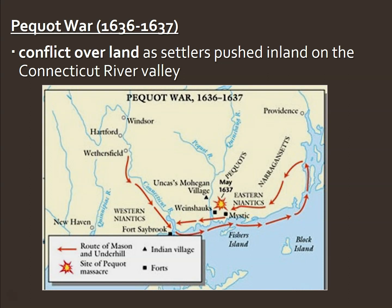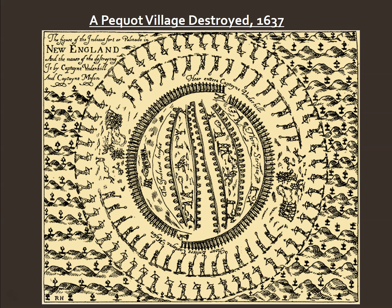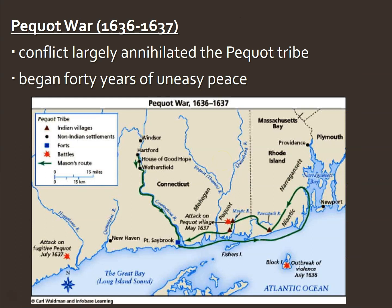Moving up to New England — specifically modern-day Rhode Island and Connecticut — we have the Pequot War. Like the Powhatan Wars, this was a conflict over land. In the engraving shown, English militia attack an Indian village assisted by other Indian allies, illustrating how the English exploited intertribal rivalries. This war did not go well for the Native Americans. The Pequot tribe was nearly wiped out, and for about 40 years, things settled into an uneasy peace.